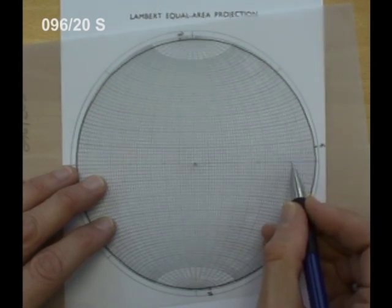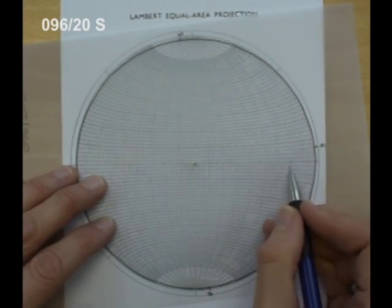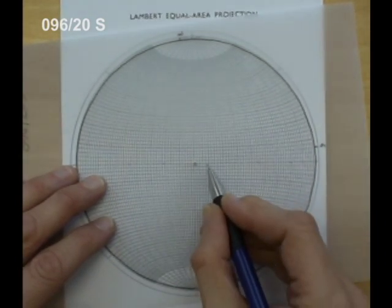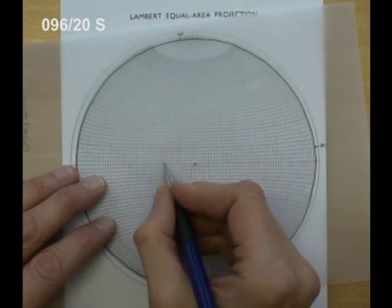Now to plot the pole, we need to count another 90 degrees along the equator. So 10, 20, 30, 40, 50, 60, 70, 80, 90.